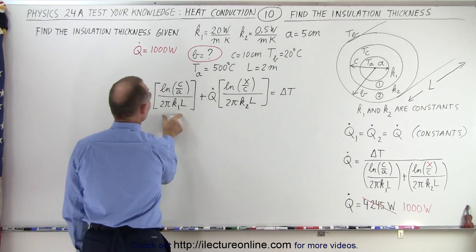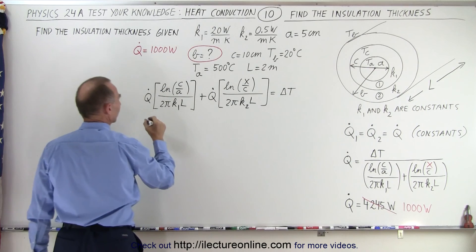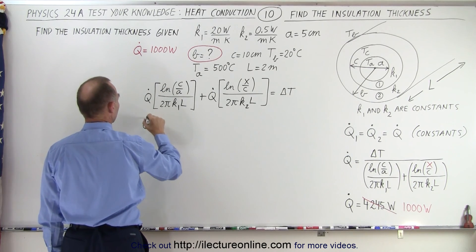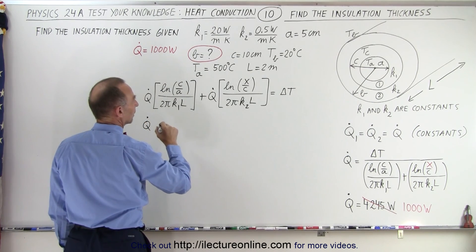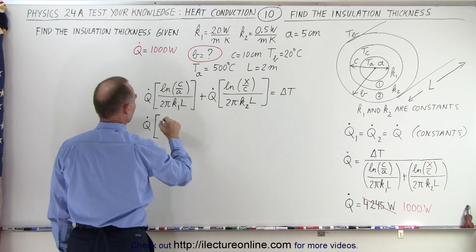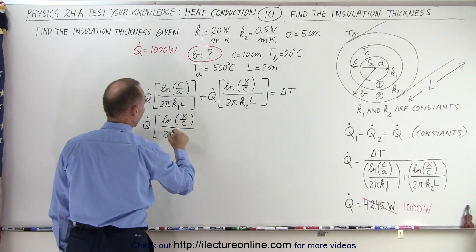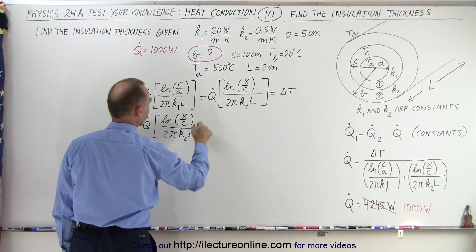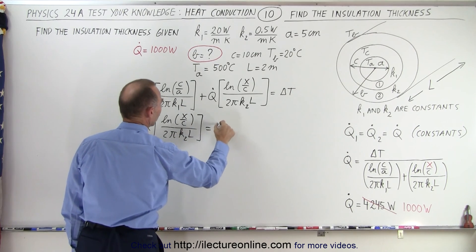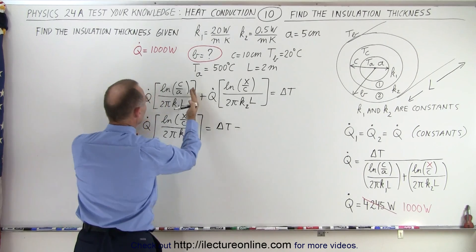So now we need to move this to the other side. So we have q dot times the natural log of x over c divided by 2 pi k2 l is equal to delta t minus, moving this to the other side.